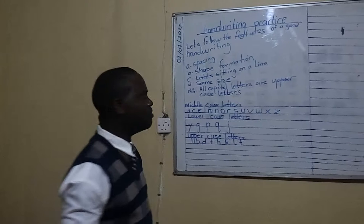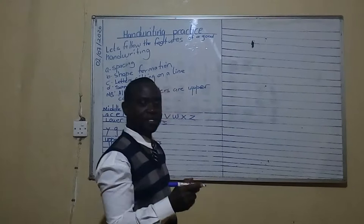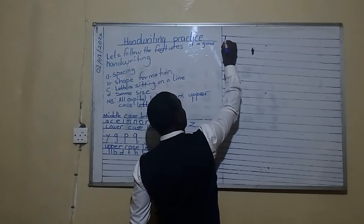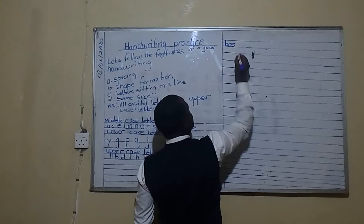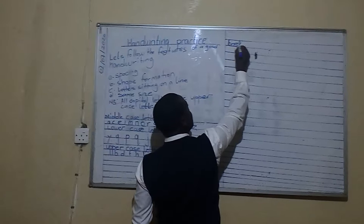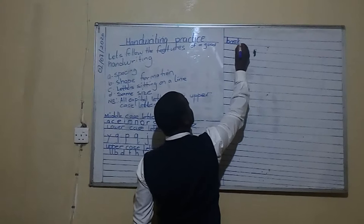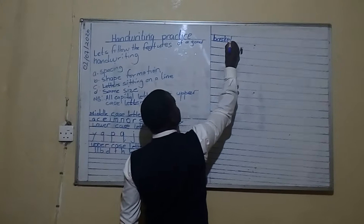Now let's have a look at some words. For example, we can have the word 'basket.' In basket, we have B — that is an upper case letter. We have A — it's a middle case letter. We have S — it is a middle case letter. Then we have K, which goes up and stretches upwards, so K is an upper case letter. Then we have E — middle case letter. And T switches upwards, so it's an upper case letter.